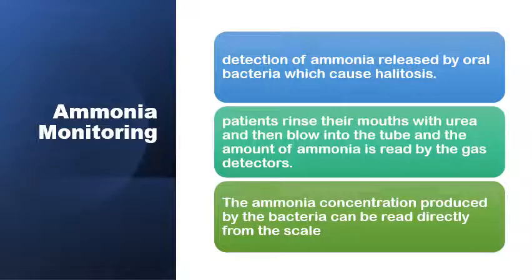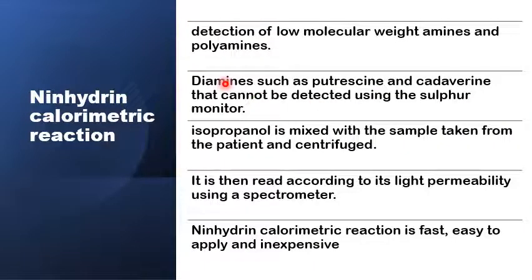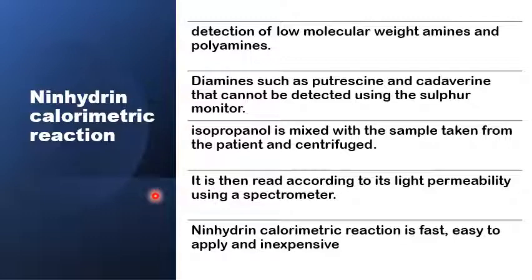There is also a specific test for detection of ammonia released in the expired air producing halitosis. Diamines such as putrescine and cadaverine can produce a very offensive odor in the breath and are not usually covered by equipment designed primarily to detect volatile sulfur compounds. They can be detected with the ninhydrin colorimetric reaction, which gives fairly accurate, fast, and easy results.